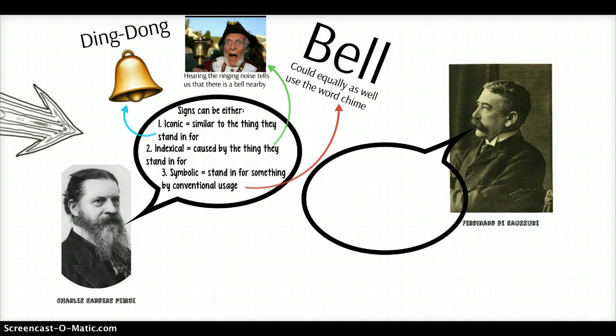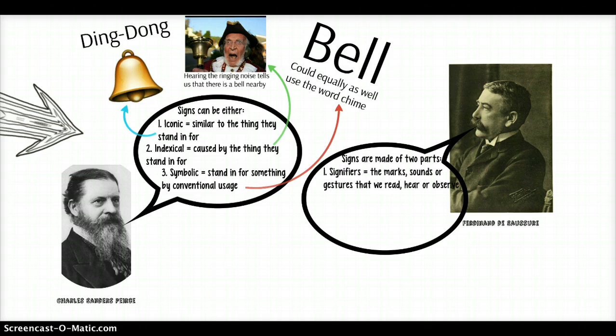This is the other dimension — the other side of the coin. This comes from Ferdinand de Saussure, a famous Swiss linguist who could speak a wide variety of languages with considerable fluency. He thought and wrote on the nature of the sign, but in a different dimension — not so interested in different types, but in the internal mechanics. He would basically agree with Peirce that one thing stands in for another, but he identifies two parts of the sign: the thing that does the standing in for, which he calls the signifier — the marks, sounds, or gestures that we read, hear, or observe.